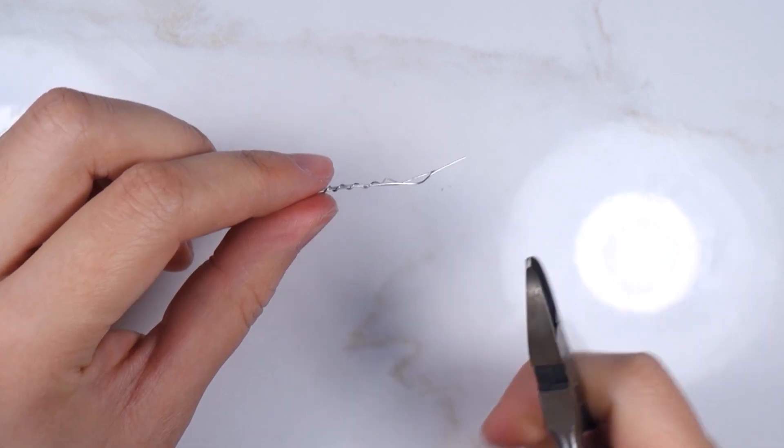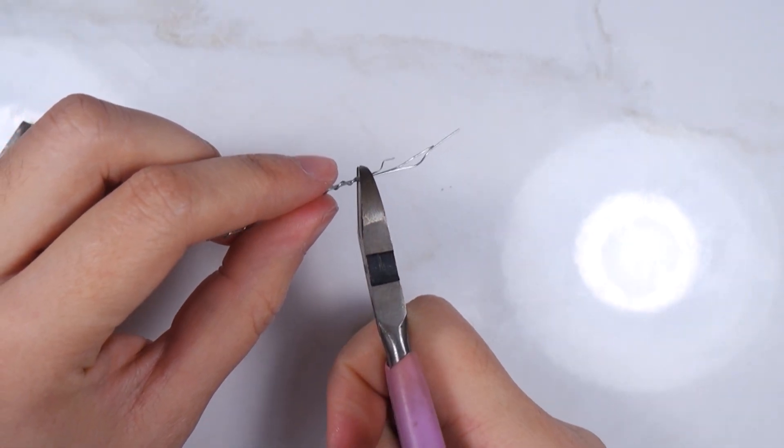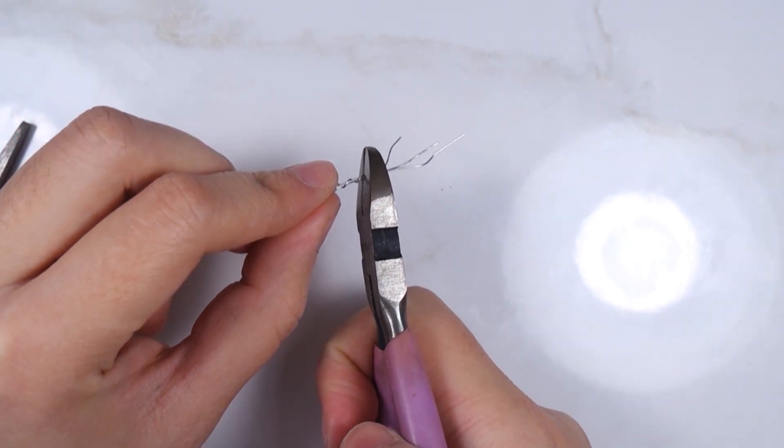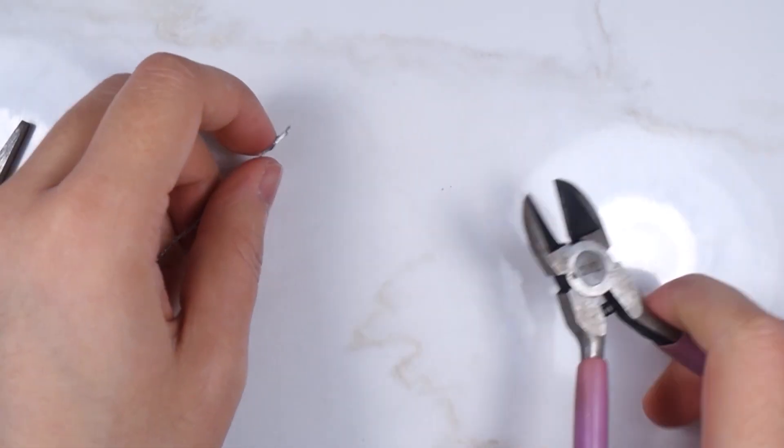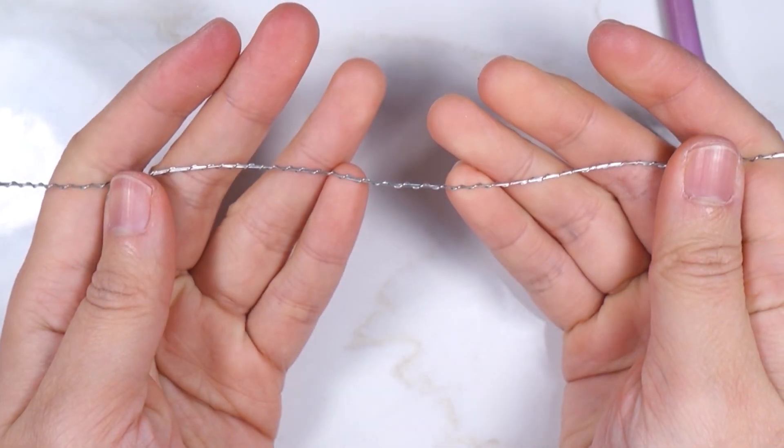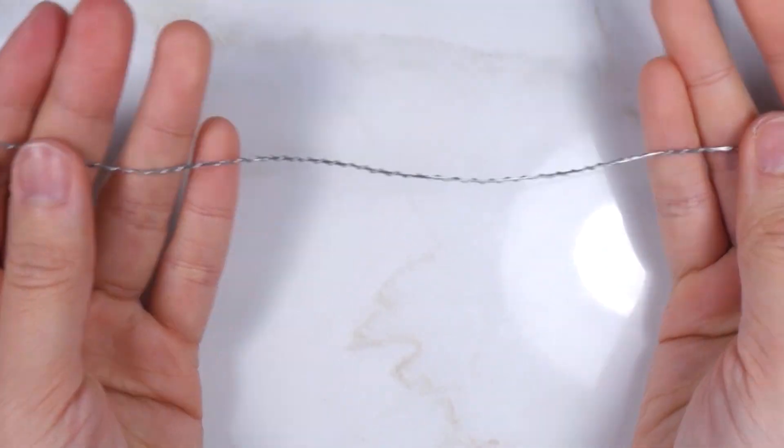Once you reach the end, cut the unevenness off on both ends. Then you will have something like this.